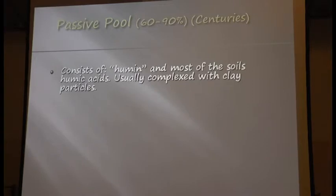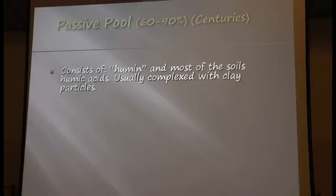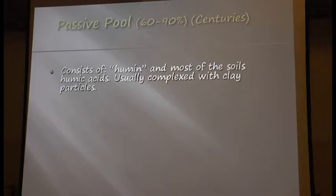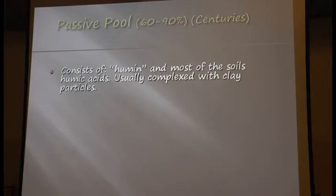The passive pool consists of humus as opposed to humic acids and some fulvic acids, and it's usually complexed with clay particles. That humus-clay particle complex is why it persists so long. In sandy soils, you're not going to get long-term storage in this humus complex because it's exposed to air and microbes much more readily than in a clay soil. Clay soils, for instance, might have 2% organic matter — that's really good for a sandy soil but not much for a clay loam soil. Sandy soils can't hold onto long-term carbon very long.